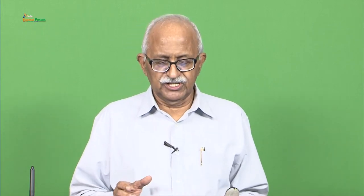Response selection is based on the probability of different outcomes — when a particular action is taken, what is the probability of particular outcomes. Probability becomes important where value, cost, and risk have to be considered. Regarding influences on decision making: uncertainty in the external world — if there are different alternatives with equal or different probabilities, a more complex situation arises. For example, whether it will rain is a simple situation where you decide whether to carry an umbrella.